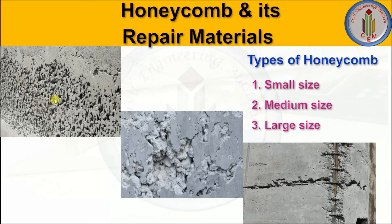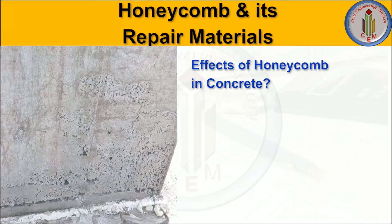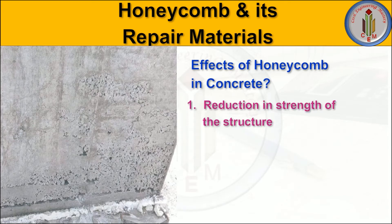Next, let's look into the types of honeycombs: small, medium, and large. Small honeycomb will not cause a major problem but needs to be repaired immediately. Medium-size honeycomb creates a problem as it tends to expose the reinforcement to environmental conditions, and moisture leads to corrosion. Large-size honeycomb — as shown in the image — has visible reinforcement, leading to severe damage to the structure. All honeycombs need to be repaired properly with repair materials.